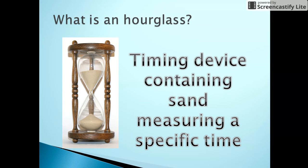Let us understand what is an hourglass. An hourglass is a time measuring device that has two glass lobes filled with sand. When the sand from one of the lobes trickles down completely to the bottom lobe, it is said to have measured a particular time. For example, if we consider this hourglass to measure two minutes, then when the sand from the upper lobe completely trickles down to the bottom, it would have measured two minutes.